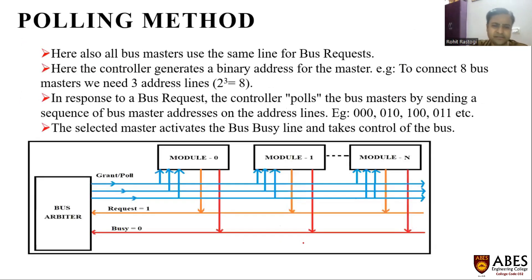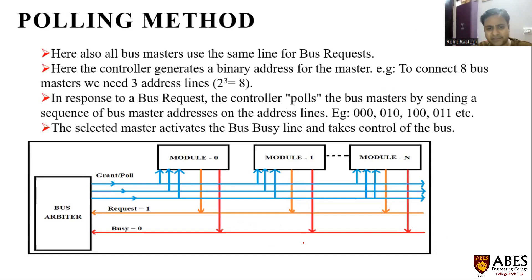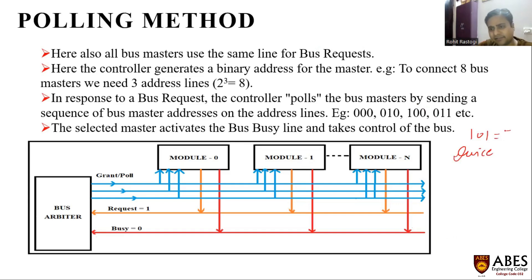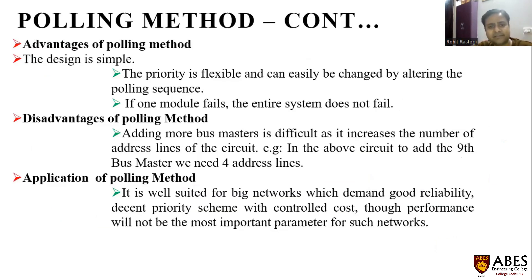The polling method is inspired from the election process, where a vote is given to a particular candidate. Similarly, the bus arbiter generates a particular signal for a specific device, and only that device is given the bus service while others wait in a queue. For example, if signal 101 is generated, the device number 5 (since 101 in decimal is 5) will be served. The advantage of this method is that it is flexible, and if any module fails, other systems will not fail. The disadvantage is that it is difficult to increase the number of address lines — to add a ninth bus master, four address lines are needed.